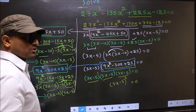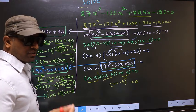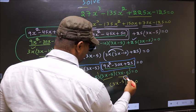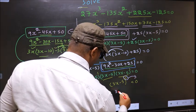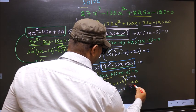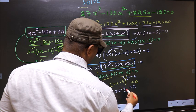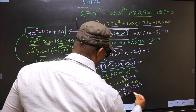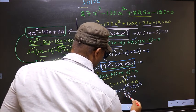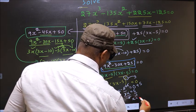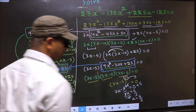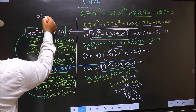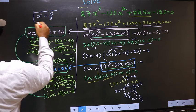They told us to solve, so we should get the values of x. We should simplify further. First shift the cube to the other side — when you shift the cube, it becomes a cube root. Cube root of 0 is 0. Now remove minus 5 by adding 5: this cancels out, giving 3x equal to 5. Now remove 3 by dividing by 3: this cancels out, giving x equal to 5 by 3. So we got only one value of x, that is 5/3. This is our answer.